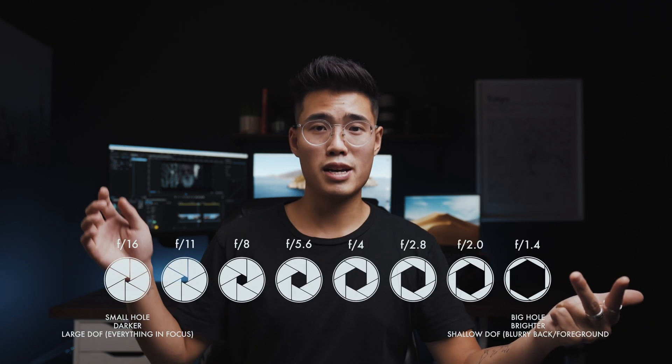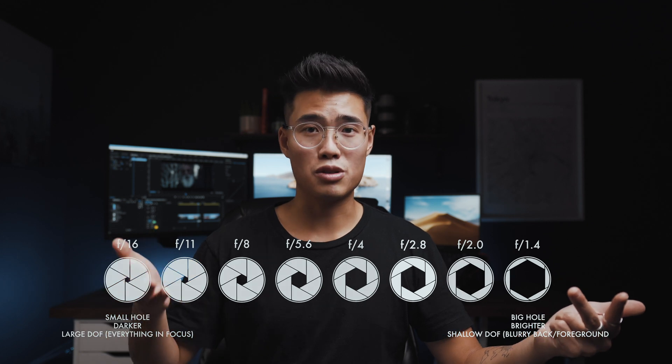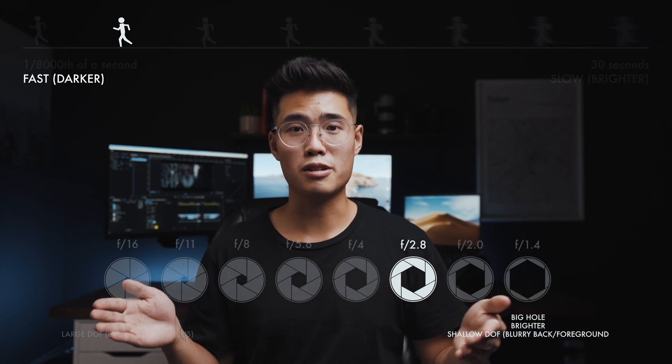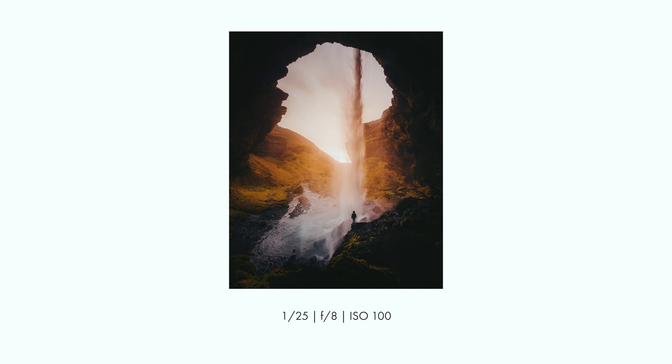So I set my aperture down to its lowest number and I'm seeing that my image is very bright. To darken it I can use my shutter speed and make it faster until it looks right. In this waterfall photo, I slowed my shutter speed down to 1/25th of a second, which is pretty slow, to capture the movement of the waterfall. But that would make my image too bright, so to compensate I raised my aperture — a large f-stop number makes the hole smaller, which makes the image darker — and it was perfect at f/8 for this photo.